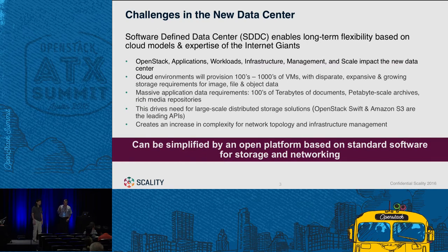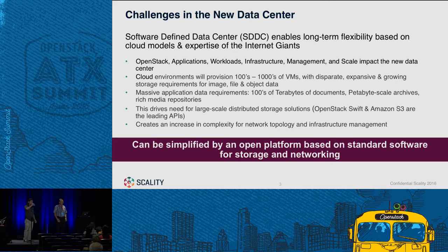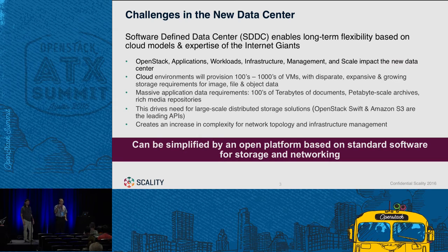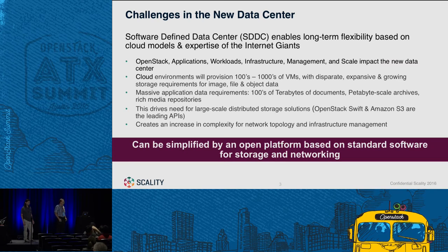We're obviously trying to build new data center infrastructures based on the technologies that the giants are using, and that's one of the reasons why OpenStack is around. One of the things it introduces is a lot of variables — we're going to have lots of different applications running in OpenStack to support our businesses. There are lots of disparate management frameworks starting to appear, and we'd like to make that common by leveraging open management frameworks like Puppet, Chef, and Ansible.